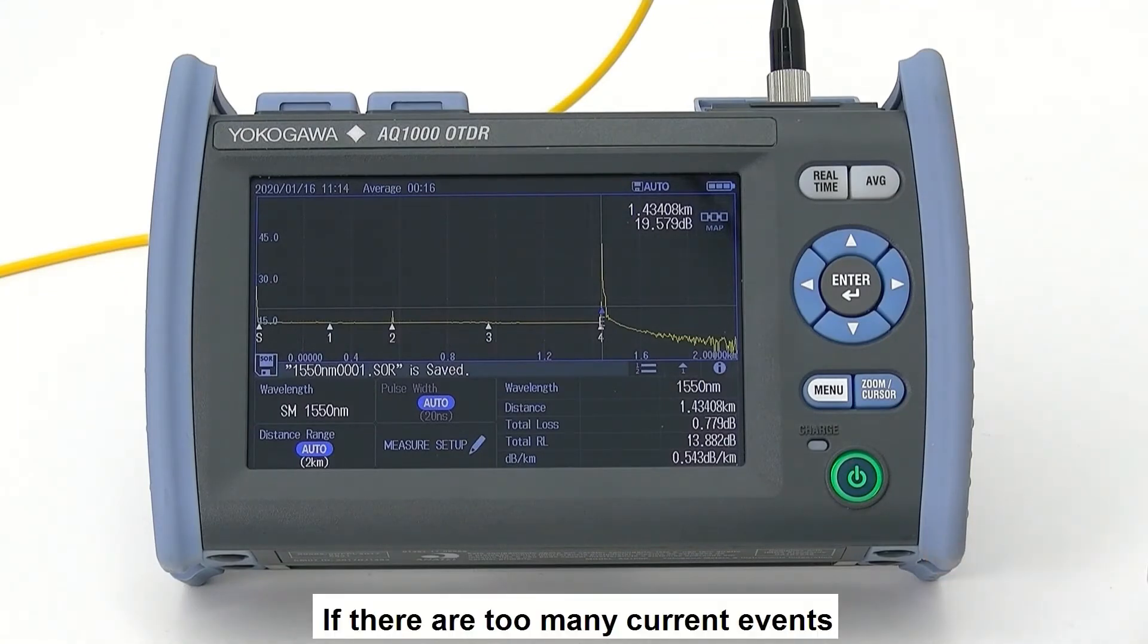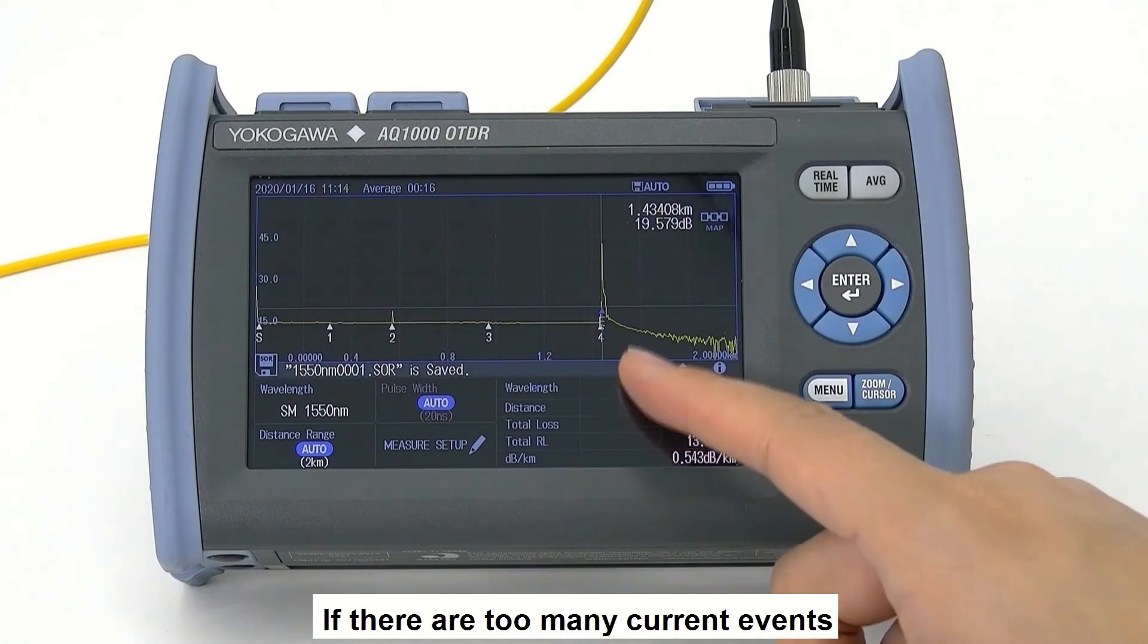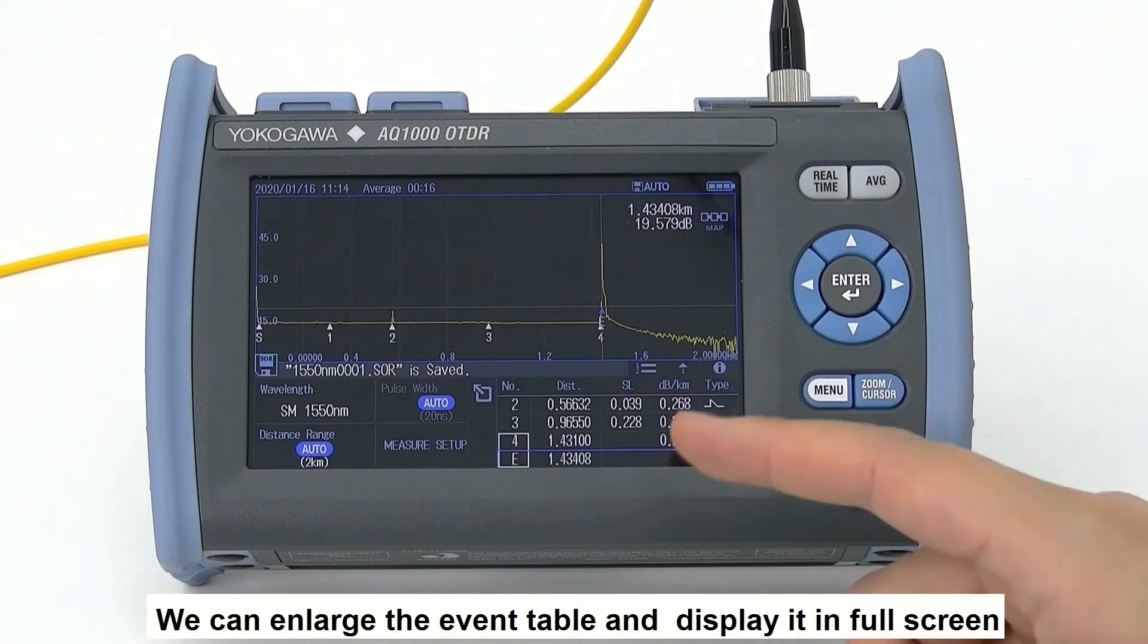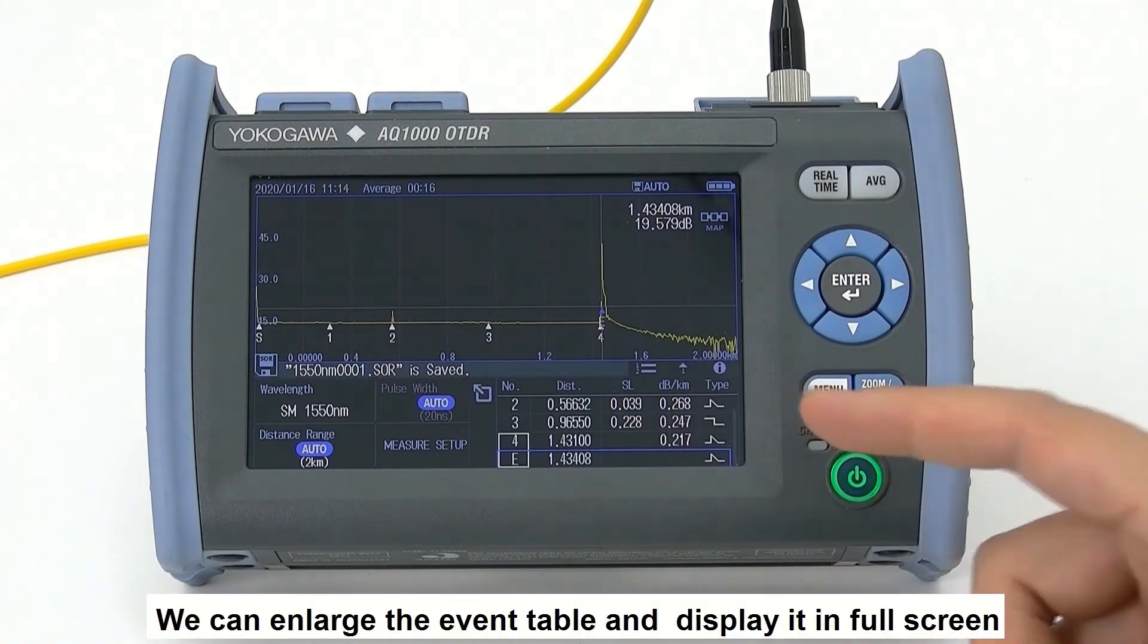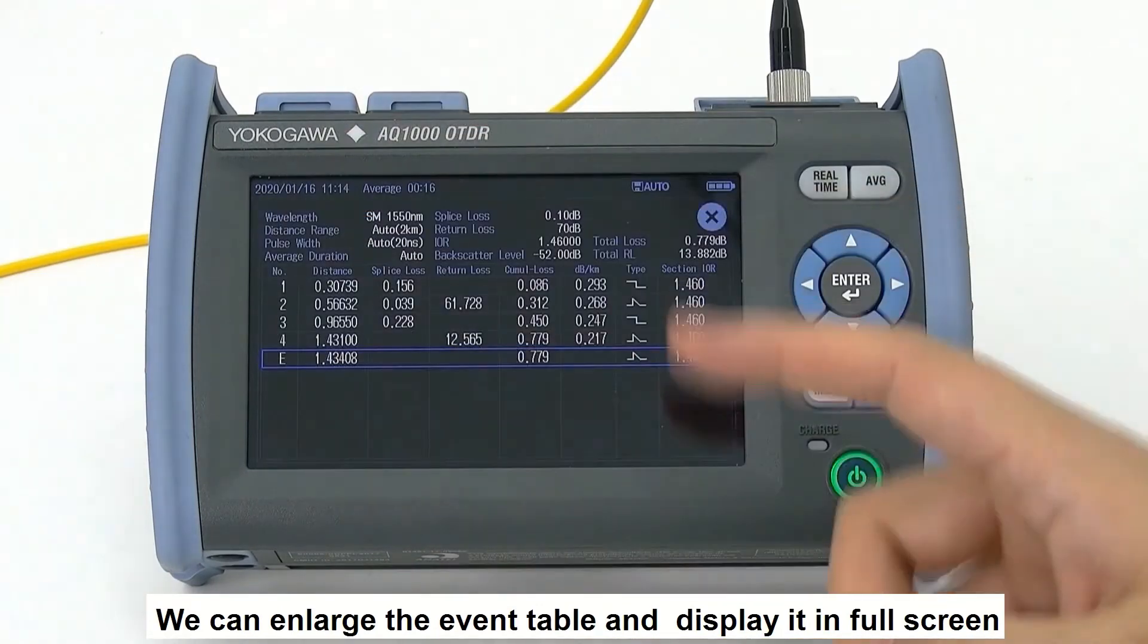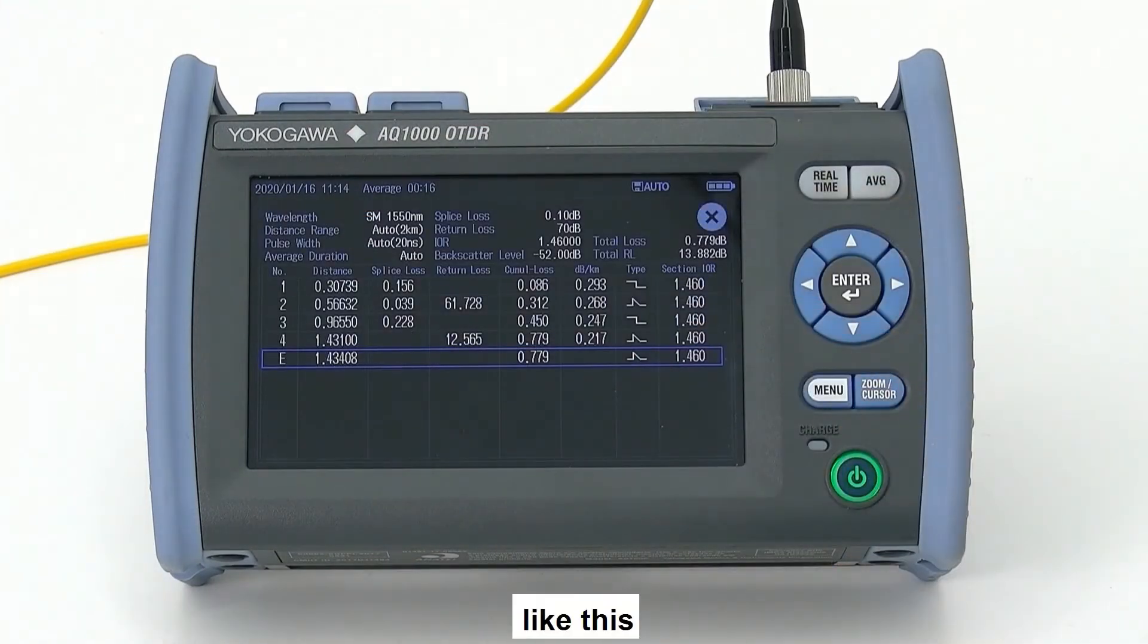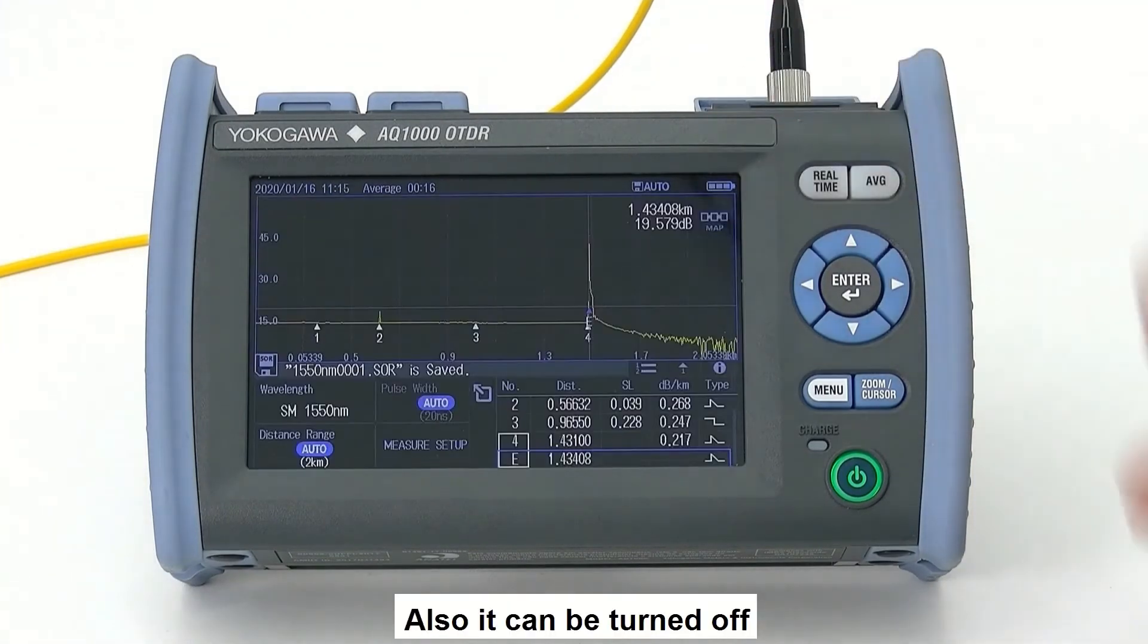If there are too many current events, we can enlarge the event table and display it in full screen, like this. Also, it can be turned off.